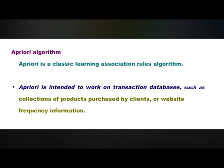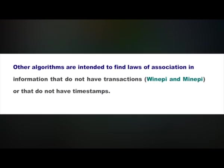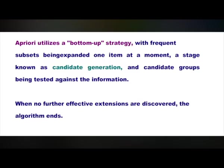Apriori is intended to work on transaction databases, such as collections of products purchased by clients or website visit information. Other algorithms are intended to find associations in data that do not have a transaction structure or that do not have timestamps. Given a set of items — for example, retail item sets, each listing of products bought — the algorithm tries to locate subsets prevalent in at least a minimum number C of item sets. Apriori utilizes a bottom-up strategy with frequent subsets being expanded one item at a time, a stage known as candidate generation, and candidate groups being tested against the data. When no further effective extensions are discovered, the algorithm ends.